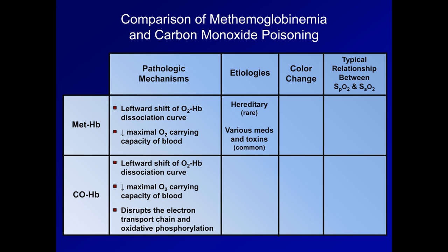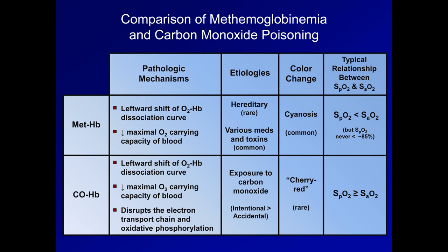Methemoglobinemia can rarely be inherited, but is more commonly caused by exposure to oxidizing drugs or a variety of toxins. Carbon monoxide poisonings are usually caused by exposure to carbon monoxide, most cases of which are intentional. Methemoglobinemia is commonly associated with cyanosis, while carbon monoxide poisoning is rarely associated with a cherry-red complexion. Finally, in methemoglobinemia, O2 SAT via pulse ox is usually lower than the calculated O2 SAT by the ABG, but never drops below about 85%. While in carbon monoxide poisoning, SpO2 SAT is always equal to or greater than SaO2.